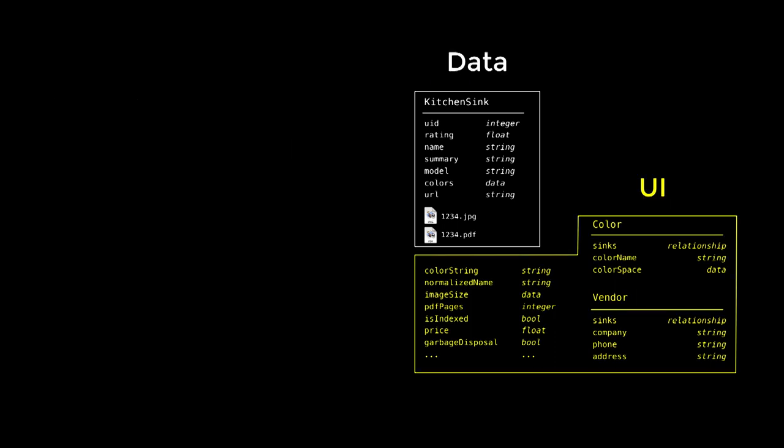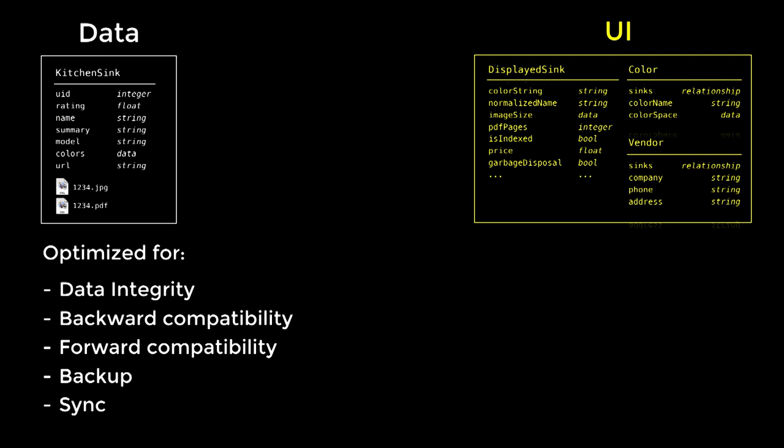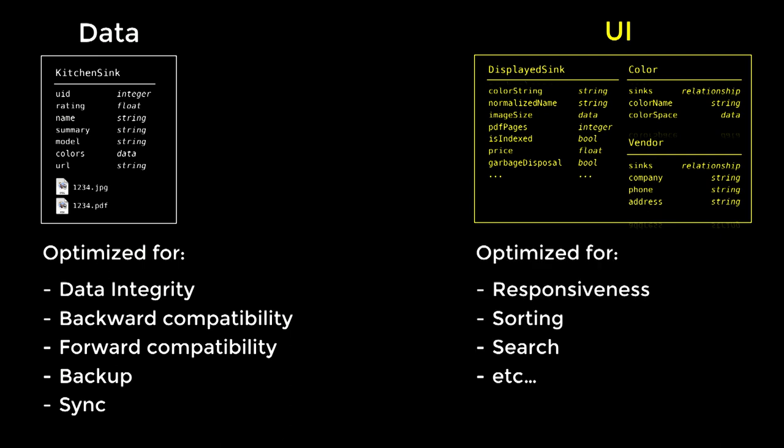We decided to actually separate those two types of data in the app — the actual data versus the UI database. The reason we do this is that for the actual data, we can optimize for things like data integrity, backward and forward compatibility, backup, and sync. Whereas the UI database, you can optimize for things like responsiveness, sorting, searching, et cetera. So you can really focus on what is important for each type of data.